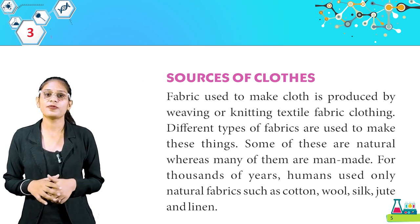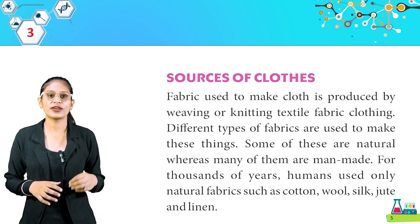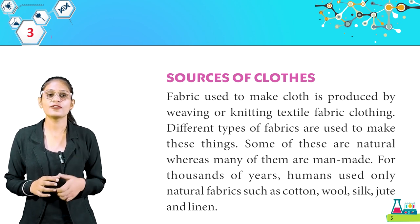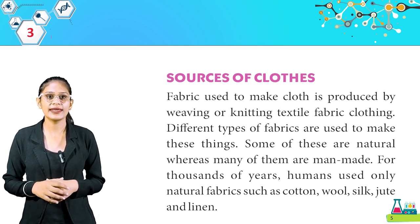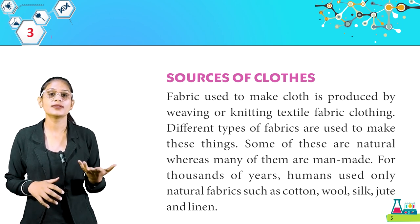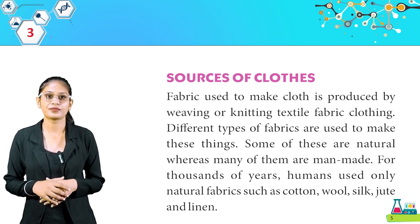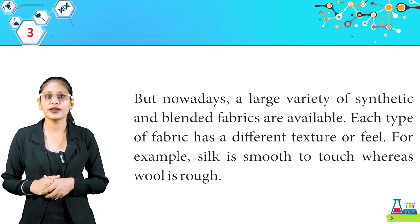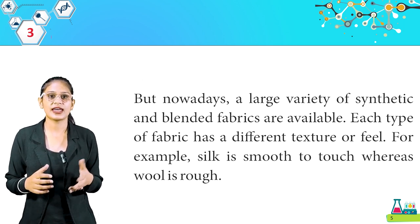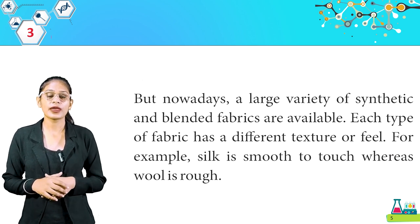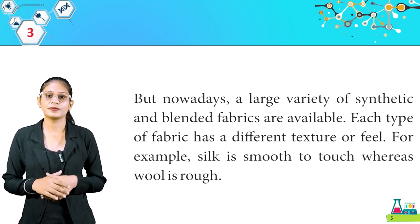Different types of fabrics are used to make clothes, whereas many of them are man-made. For thousands of years, humans used only natural fabrics such as cotton, wool, silk, jute, and linen. But nowadays, a large variety of synthetic and blended fabrics are available. Each type of fabric has a different texture or feel. For example, silk is smooth to touch whereas wool is rough.